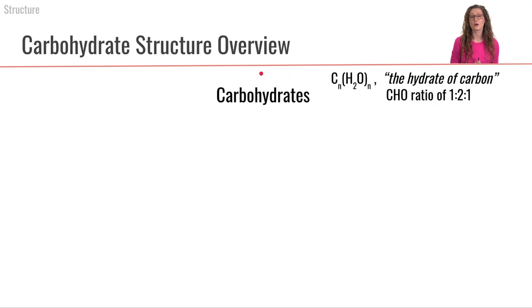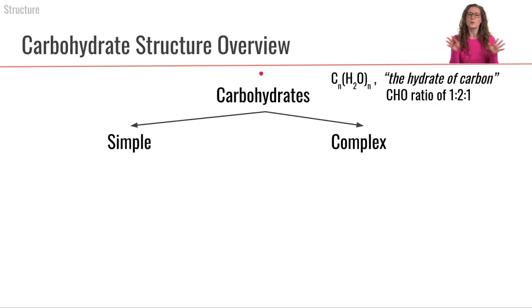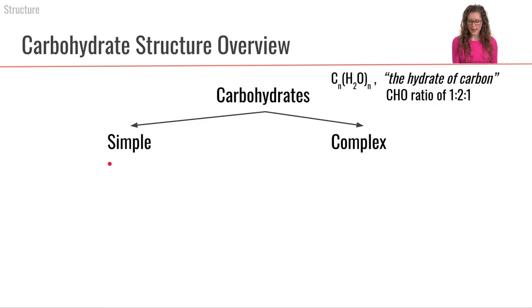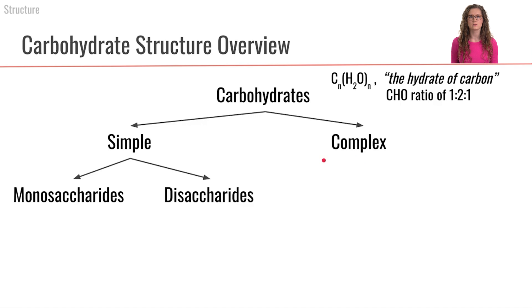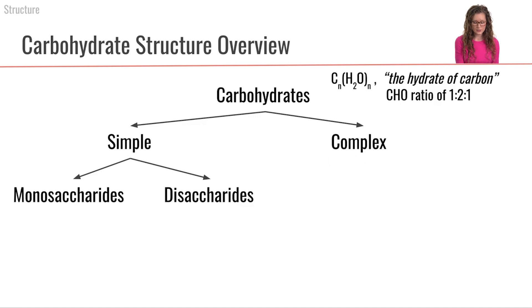So let's look at the different forms that carbohydrates come in our diet. We can really divide carbohydrates into two categories: simple and complex. These are referring to the sizes of the compounds. Simple carbohydrates come in two different flavors: monosaccharides and disaccharides.